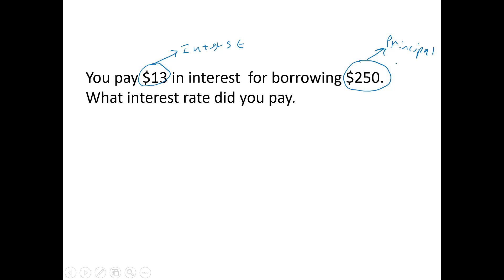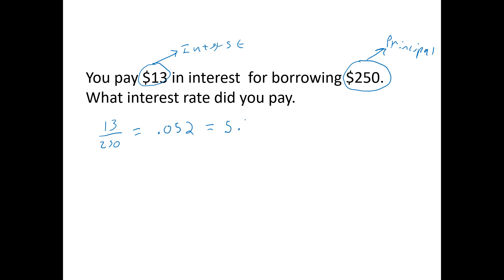You're borrowing $250 and you're paying $13 for the use of this. The percentage — $13 — divided by the whole — $250 — gives us our interest rate. 13 divided by 250 is 0.052. Typically rates are given as percents, so moving the decimal point over two places and attaching the percent symbol gives us 5.2%.